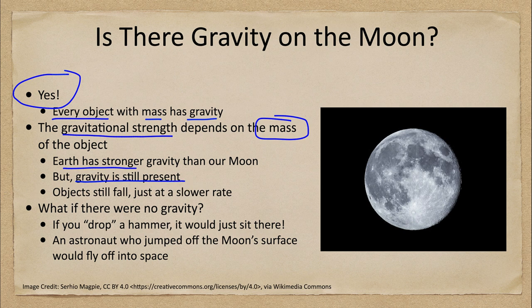Now, let's take a look at this as an example and watch a video from the Apollo 15 mission, where they did the experiment to see how things fall. What we're going to see is that while objects still fall, they do fall at a slower rate. So let's take a look at that video here.